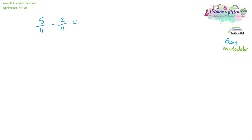Five over 11 minus two over 11. Again, we can rewrite this as five minus two over 11, which equals three over 11.